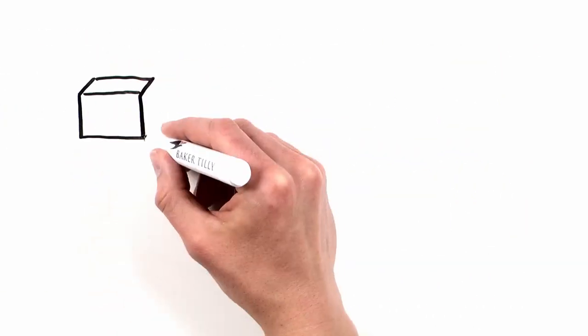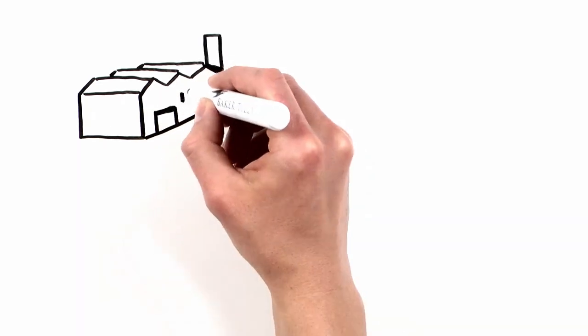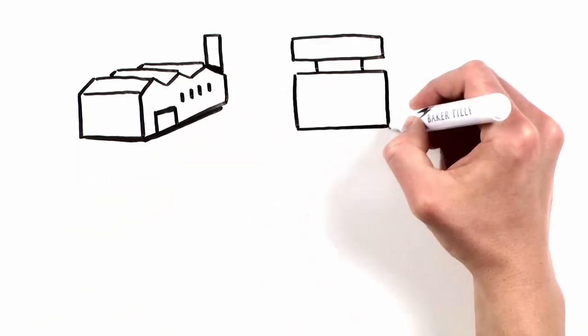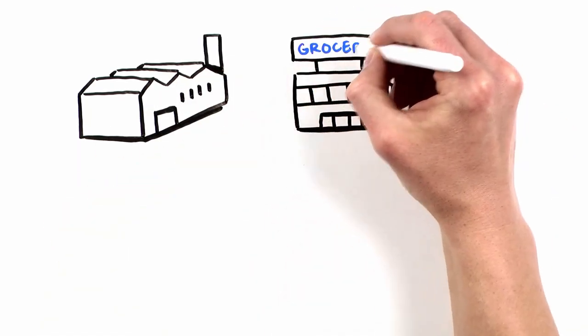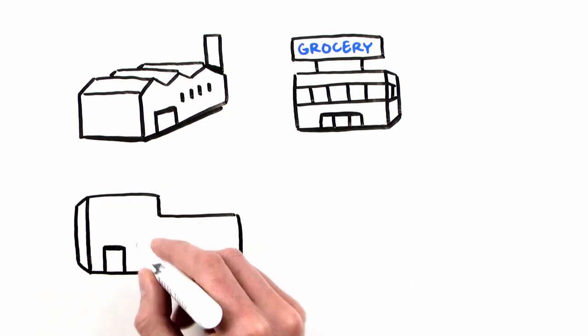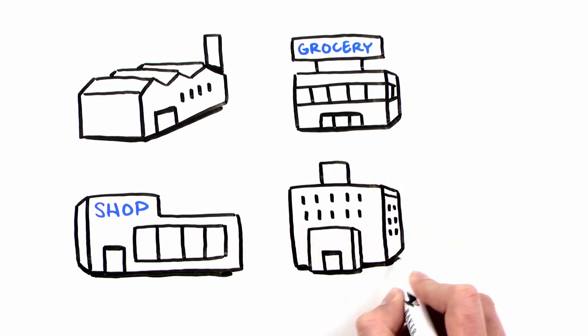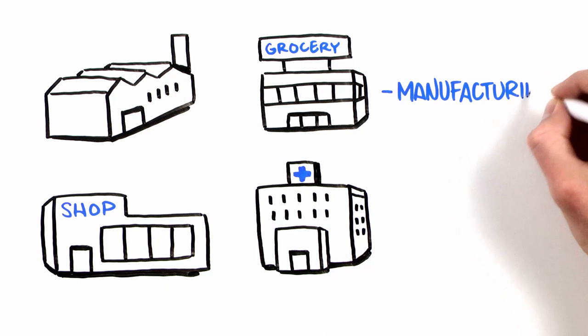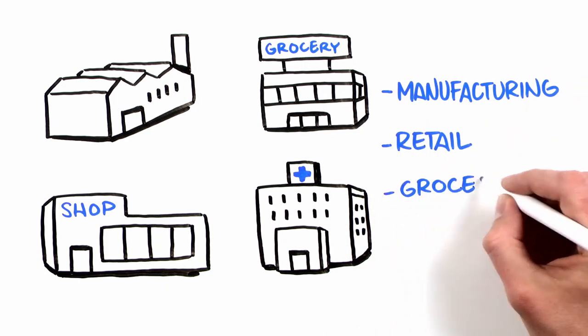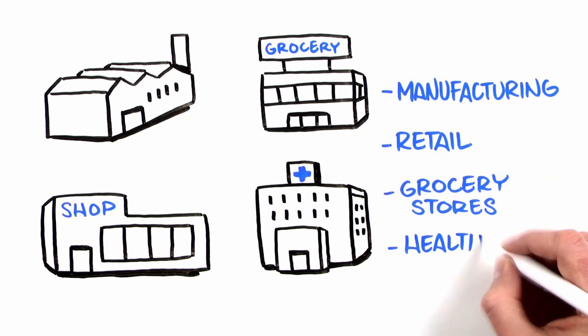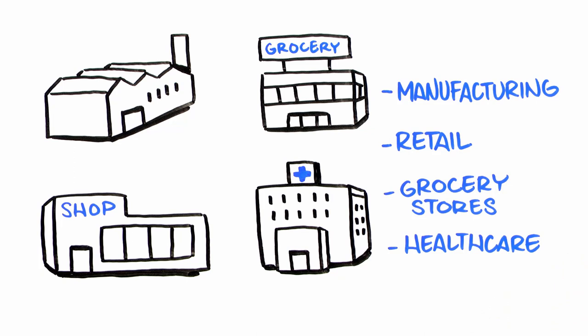Particularly attractive projects for New Markets Tax Credit allocations are those that make an impact in the community through the creation of permanent jobs, new goods and services in underserved areas, access to healthy and affordable food options, and greater environmental sustainability. For example, manufacturing facilities, retail developments, grocery stores, and healthcare facilities are attractive to CDEs.